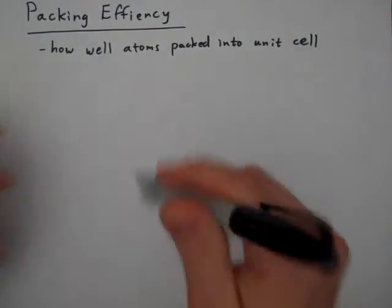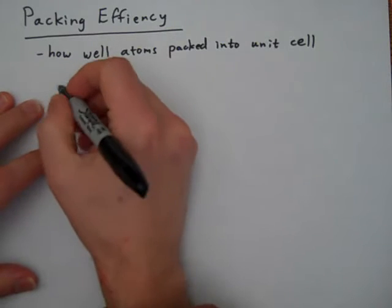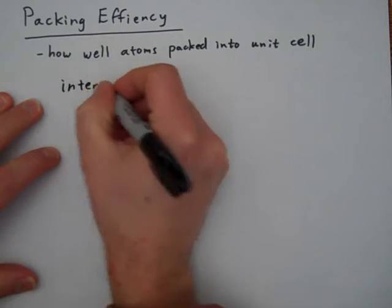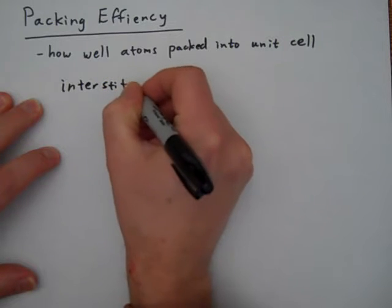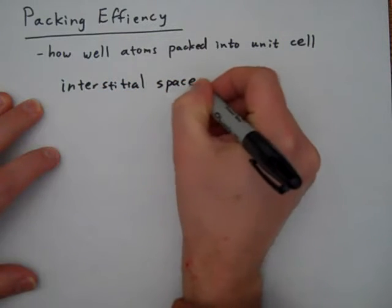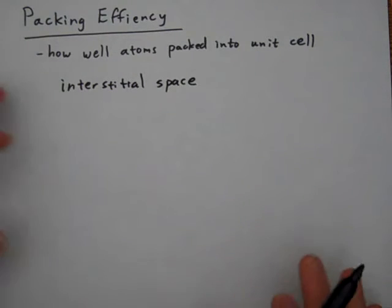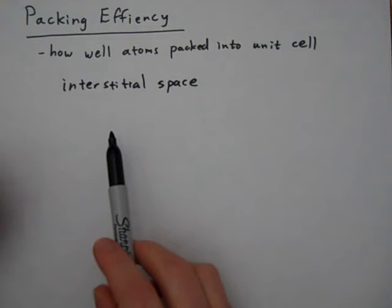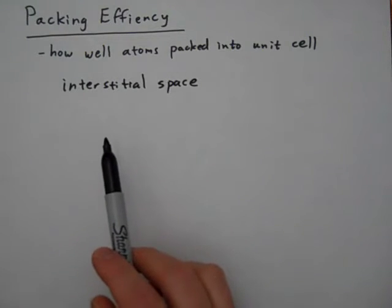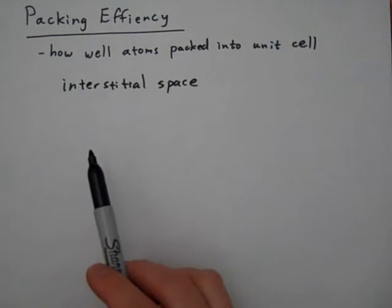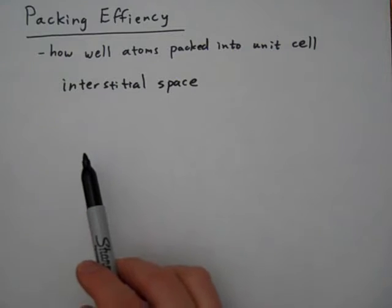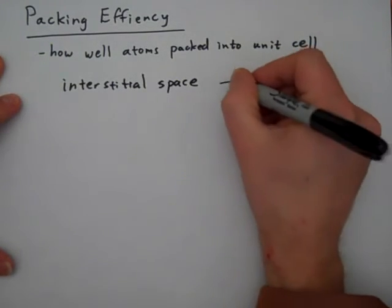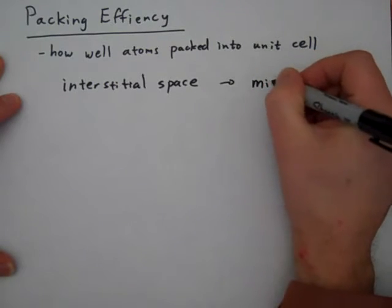So let's write down some definitions. First, the empty space in a unit cell is called interstitial space. This actually refers to any empty space between any solid object, so it's sometimes used to talk about interstitial cells in biology or interstitial spaces in architecture and so forth.